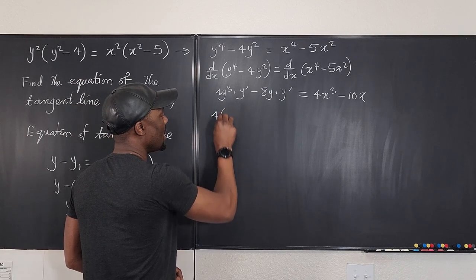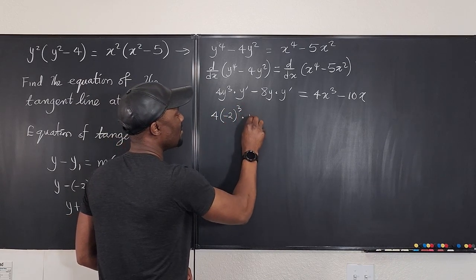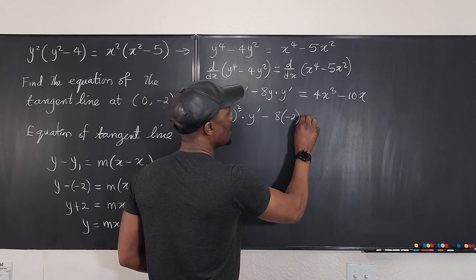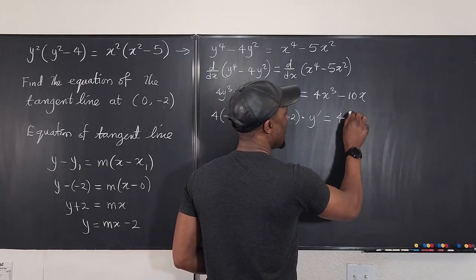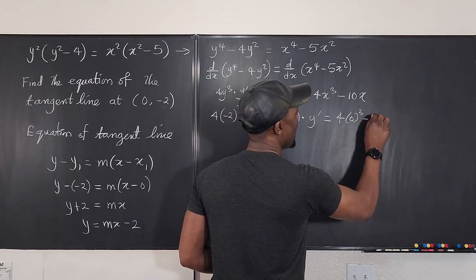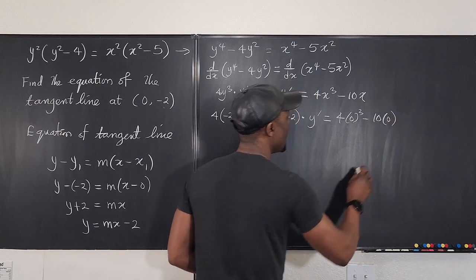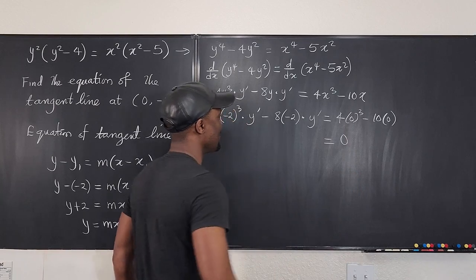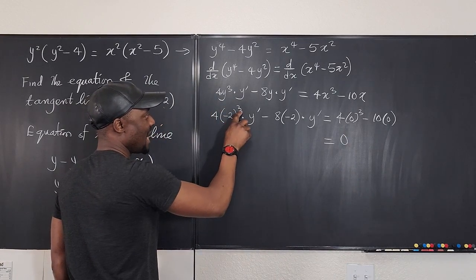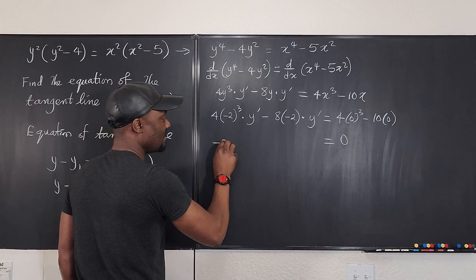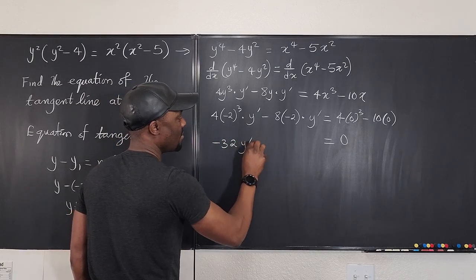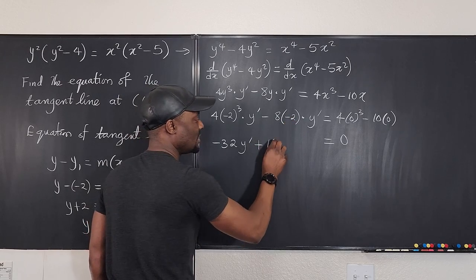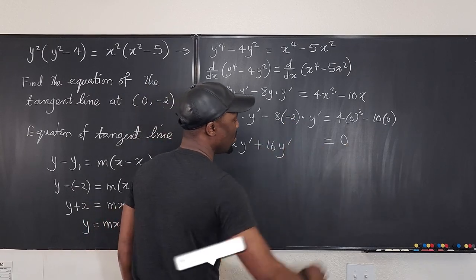This is going to be 4 times negative 2 cubed times y prime minus 8 times negative 2 times y prime equals 4 times 0 cubed minus 10 times 0. Clearly everything on this side will become 0 so I got 0 and here I have negative 8 times 4 that's negative 32 y prime minus oh this is minus 8 times minus 2 that's plus 16 y prime equals 0.